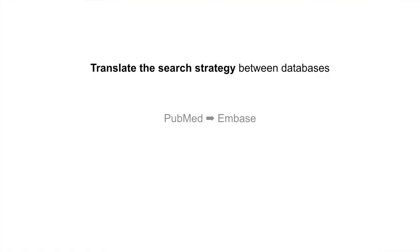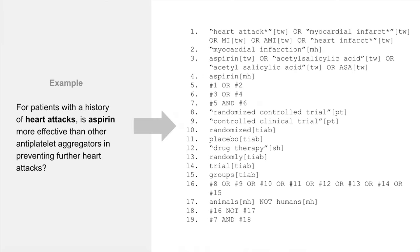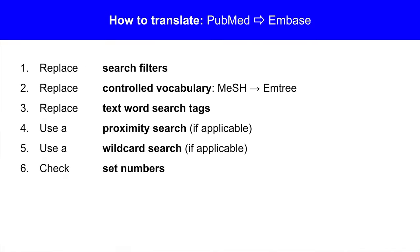You will likely need to translate the search strategy when you switch to a new database because of these differences. This video shows you how to translate a PubMed strategy for searching Embase. In our demonstration, we'll work with a research question about the treatment of heart attacks with aspirin. On the right is a search strategy that represents this question in a PubMed search. If you're not familiar with how to write this strategy, please click the link at the top to watch our video on strategy formulation. To translate a strategy from PubMed to Embase, here are the procedures.